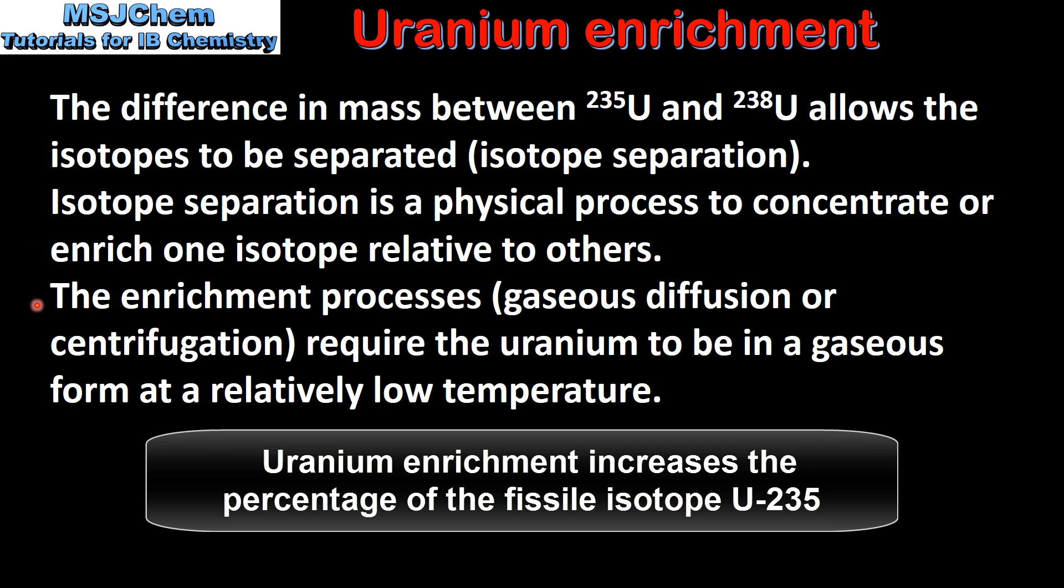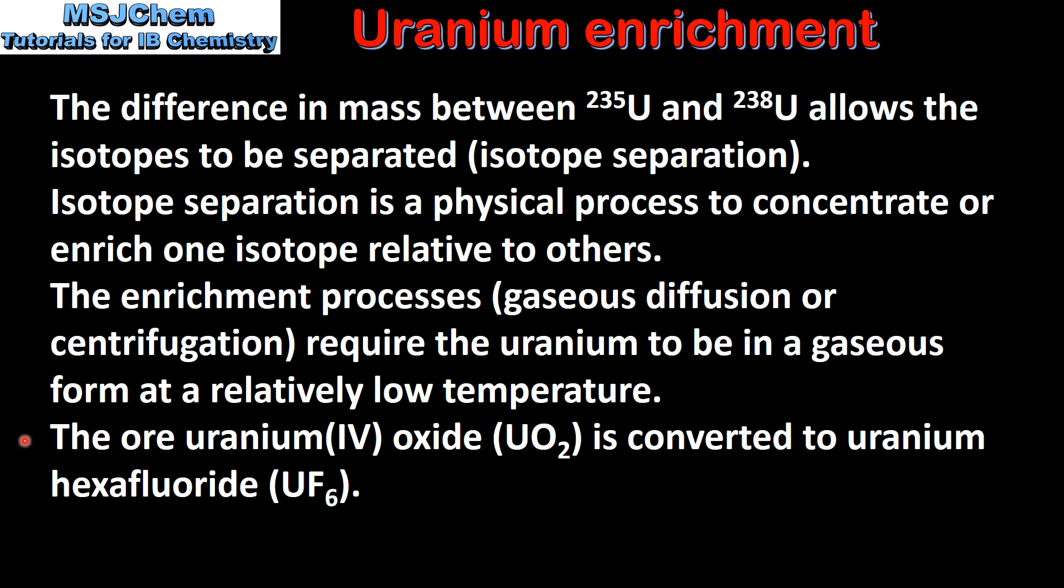The enrichment processes, that's gaseous diffusion or centrifugation, require the uranium to be in a gaseous form at a relatively low temperature. For this reason, the ore-uranium oxide is converted to uranium hexafluoride.